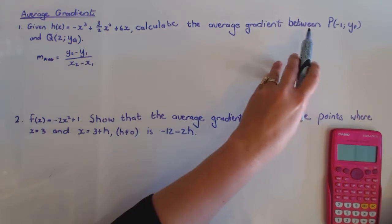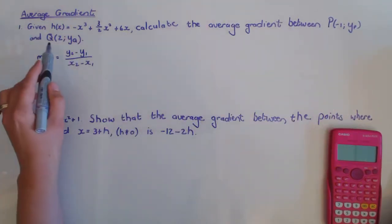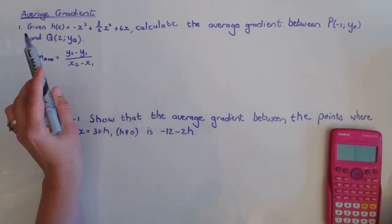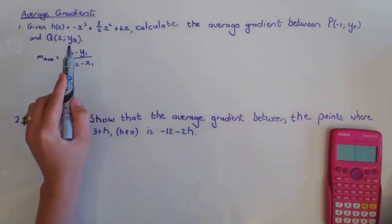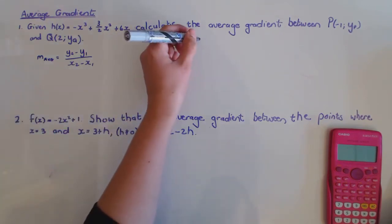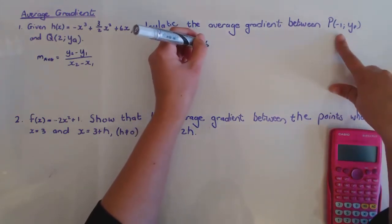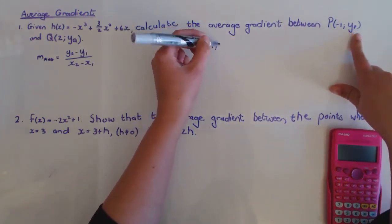Calculate the average gradient between the point P(-1, yp) and Q(2, yq). But now they did not give me the y value, so I must just go and calculate that first. So let's find the function h in the point where x is minus 1, because that's going to give me that y.